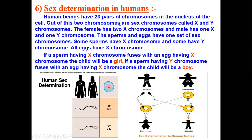Out of these 23 pairs, two chromosomes are sex chromosomes, known as X and Y chromosomes. The female has two X chromosomes, and the male has one X and one Y chromosome. Out of 23 pairs, one pair — meaning two chromosomes — are the sex chromosomes. The remaining 22 pairs of chromosomes are the same in both male and female. Only one pair is the sex chromosome, called X and Y.